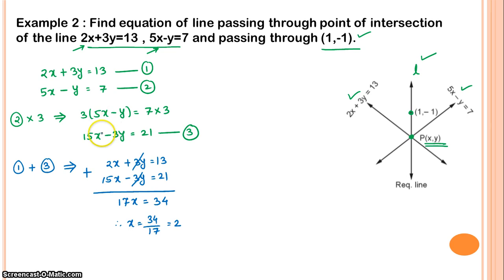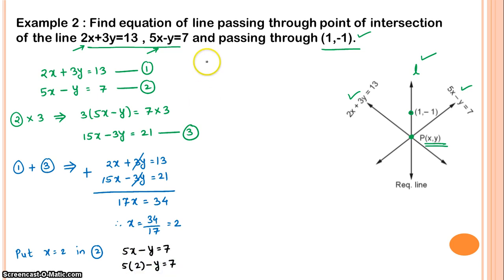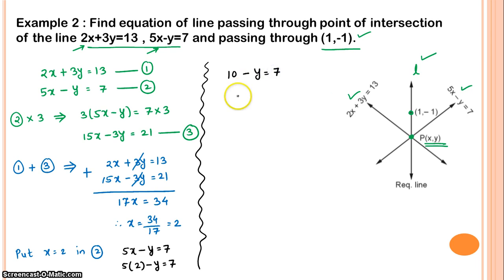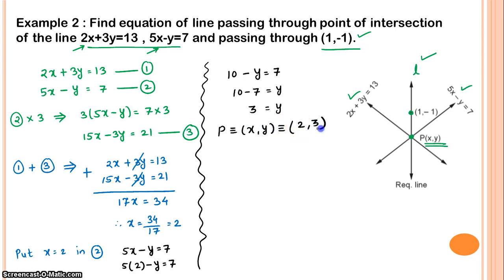With x equals 2, substitute into the second equation 5x minus y equals 7: 5 times 2 minus y equals 7, so 10 minus y equals 7, therefore y equals 10 minus 7 equals 3. So the point of intersection P has coordinates (2, 3).